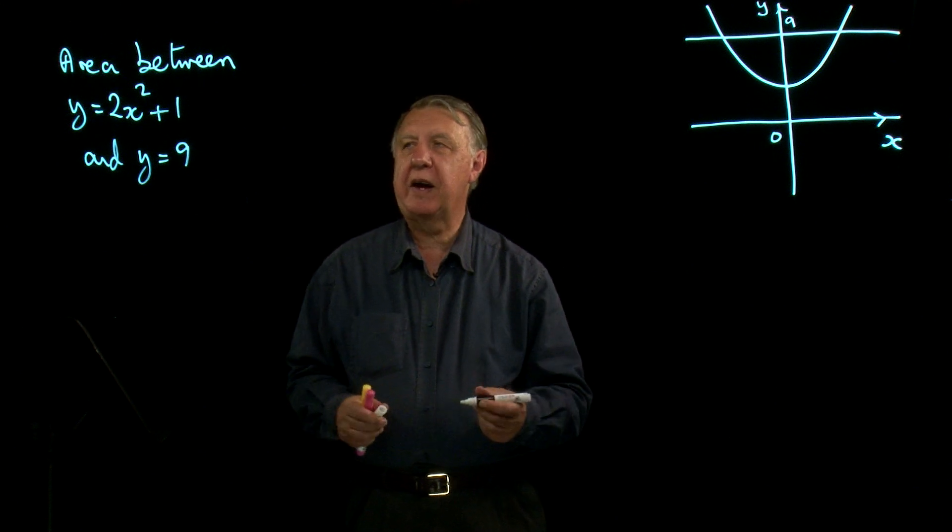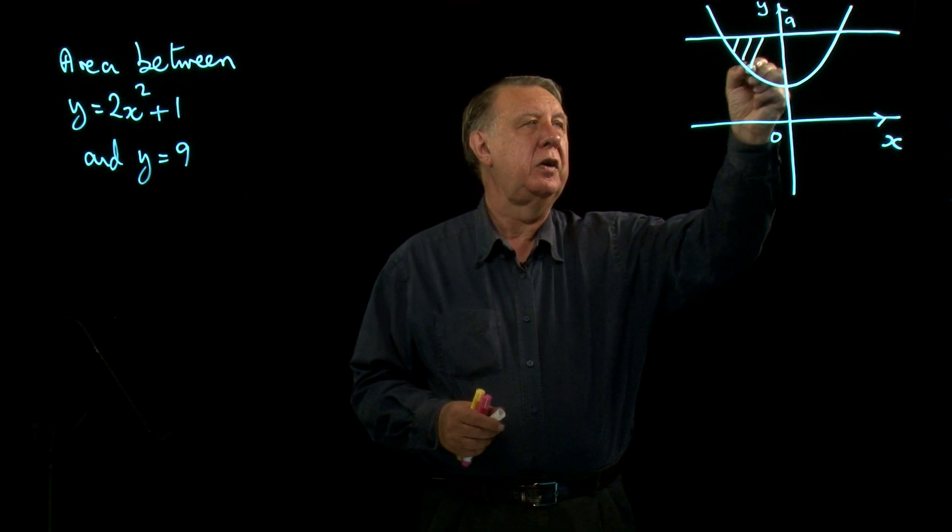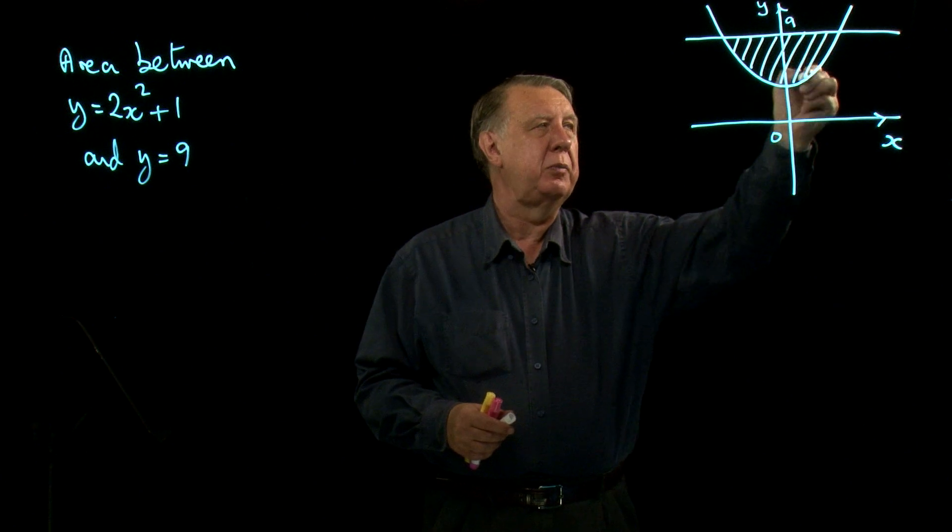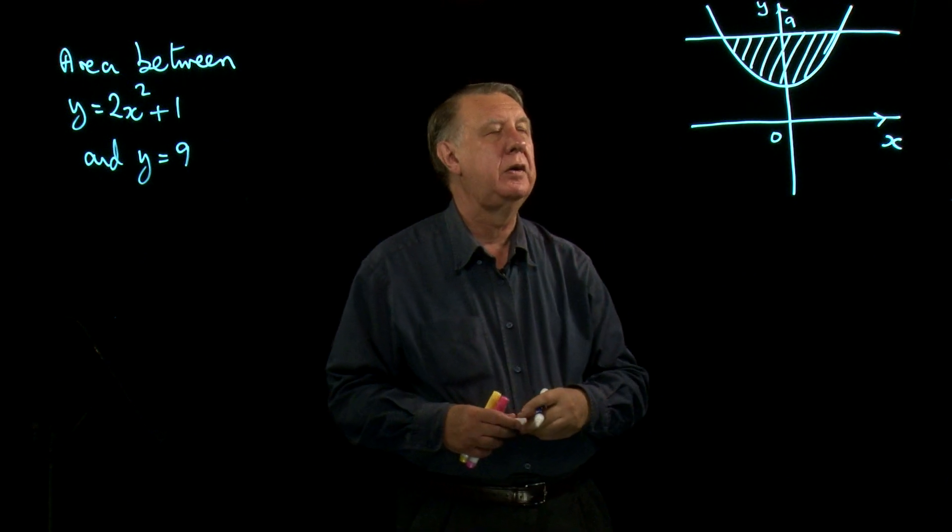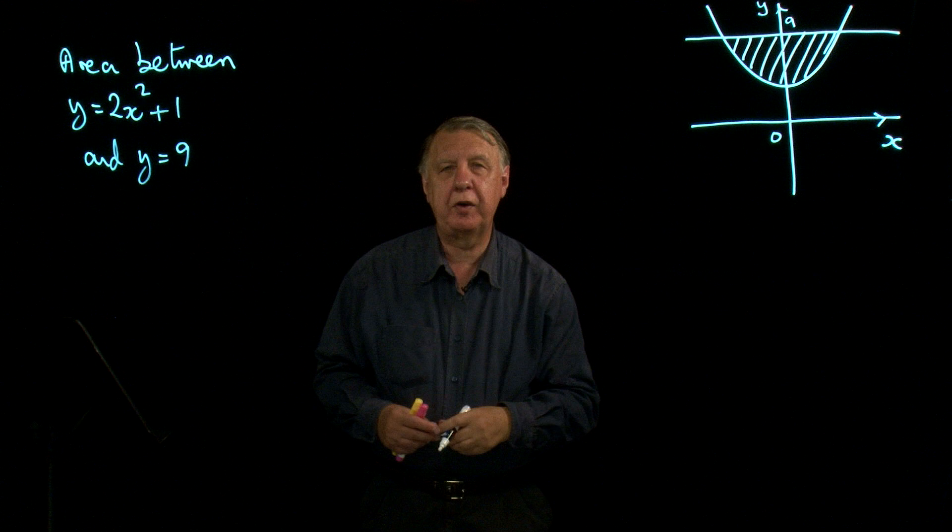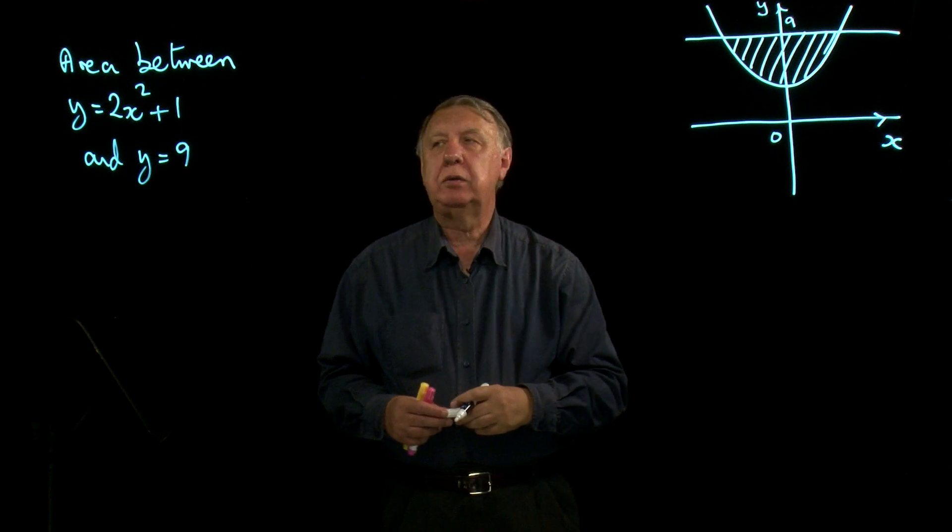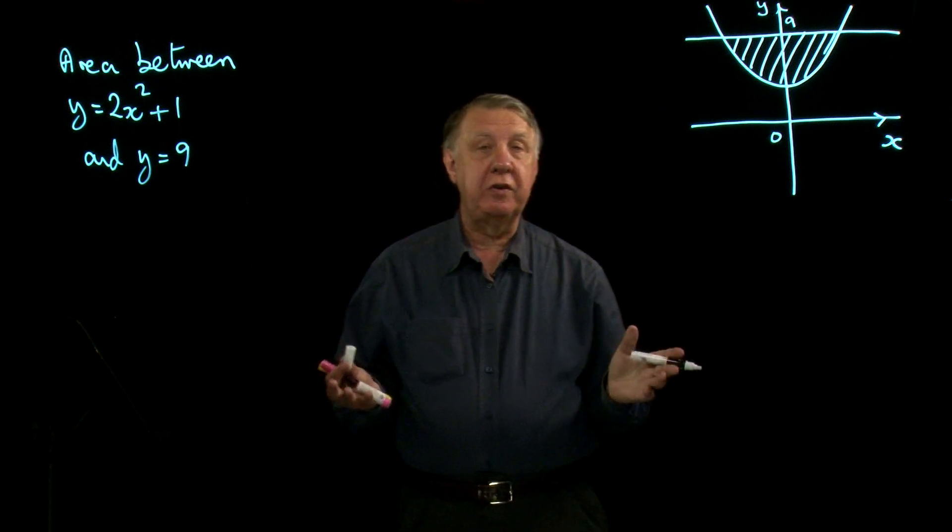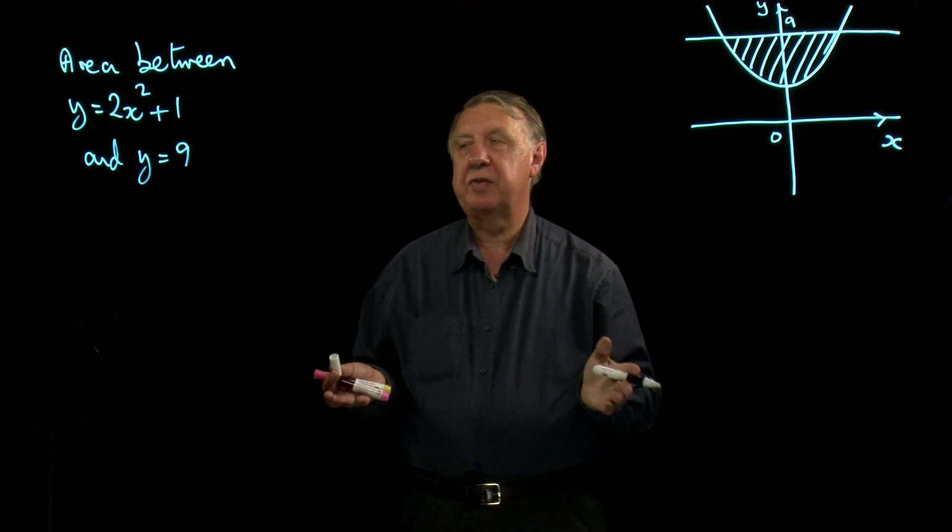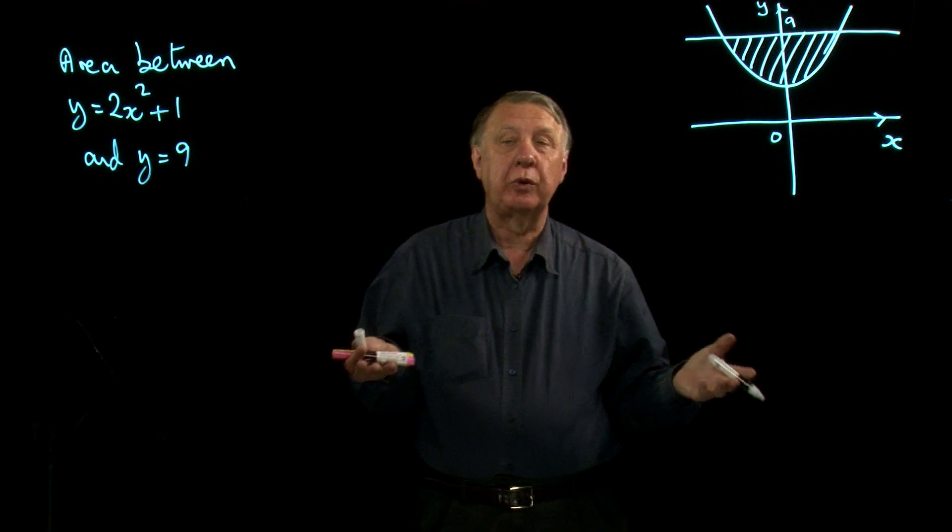So we want the area between the line y equals 2x squared plus 1 and the line y equals 9. So we're trying to find that area there. Now we know it's to do with integration, with definite integration, because it's that sort of question.